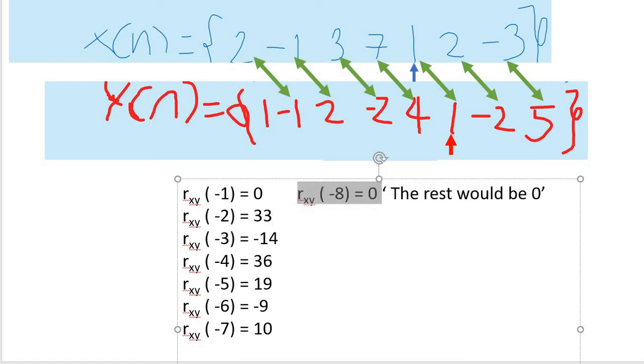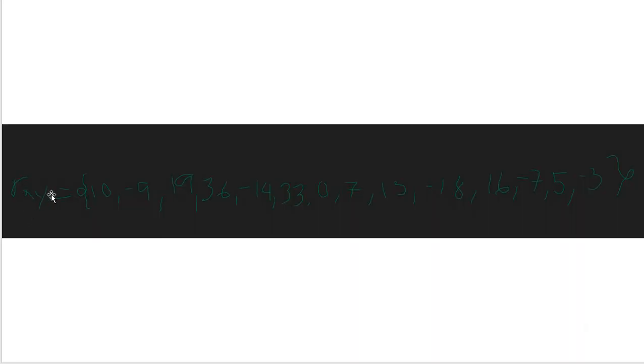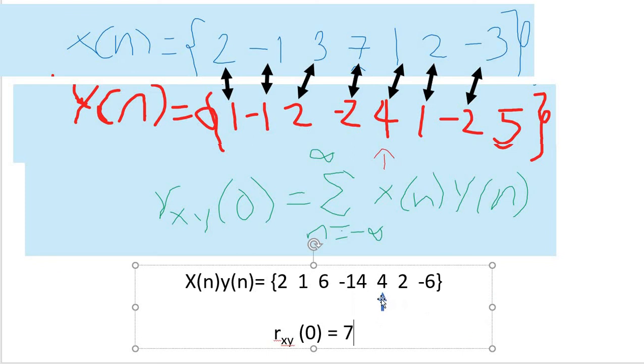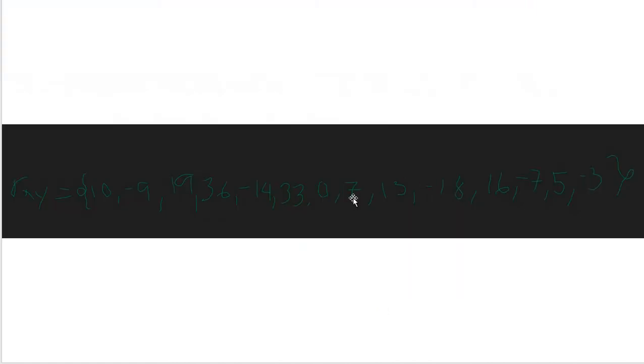Our final answer would be this. As you can see, 10, -9, 19, 36, -14, 33, 0, 7, 13. What's the origin of here? The origin would be the first one that we solved earlier. It would be this one. And the answer for that is 7. So, the 7 would be here. As you can see. So this would be our origin. That's it. And that's our correlation. Good luck.